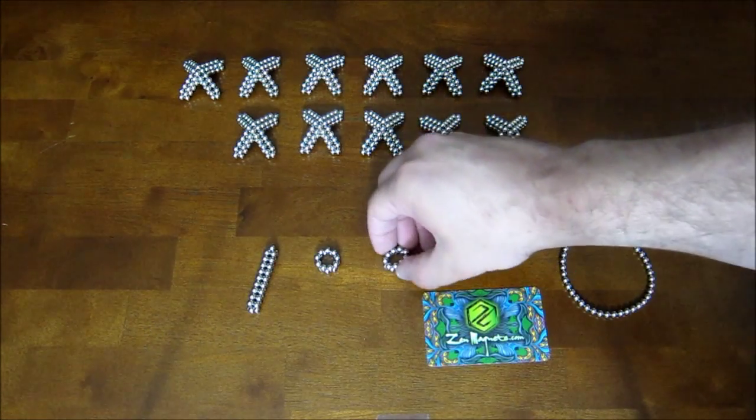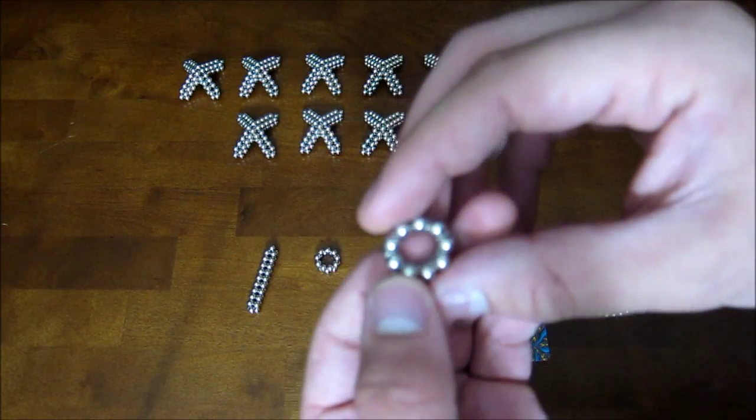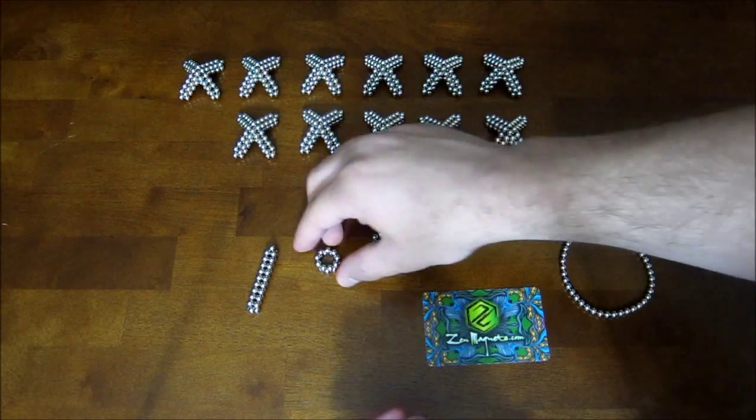Then you need two shorter straight pieces that are each made of two stacked rings of nine magnets, and you flatten them out just the same way.